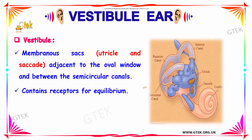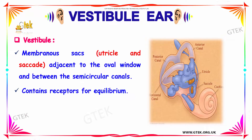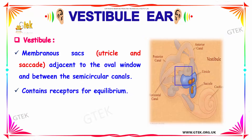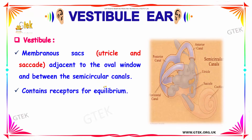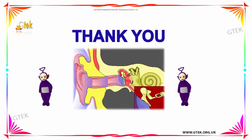The vestibule consists of membranous sacs which include the utricle and saccule, adjacent to the oval window and between the semicircular canals. It contains receptors for equilibrium, so your vestibule has the receptors for maintaining the equilibrium of the body. Thank you so much for joining. Hope you have got a very good idea about the sense organ, the Ear.